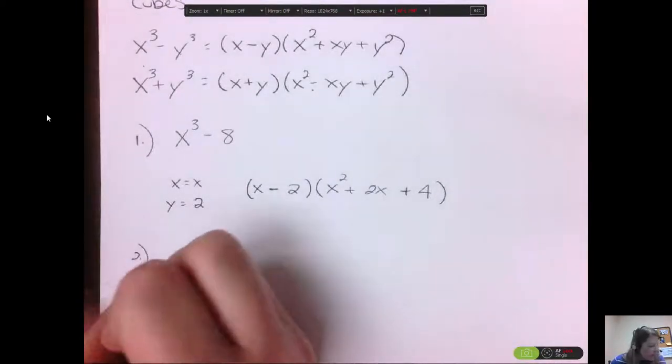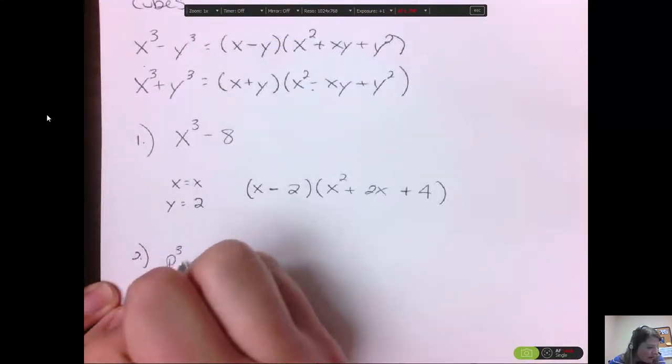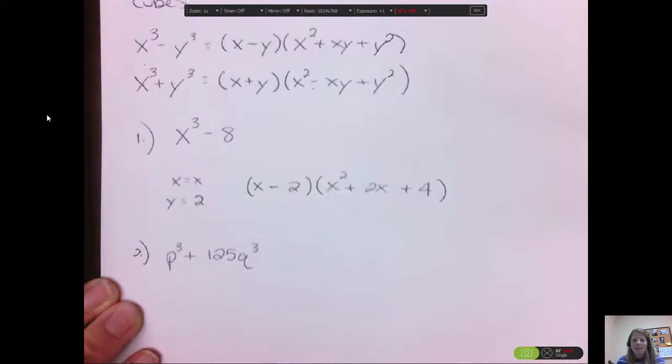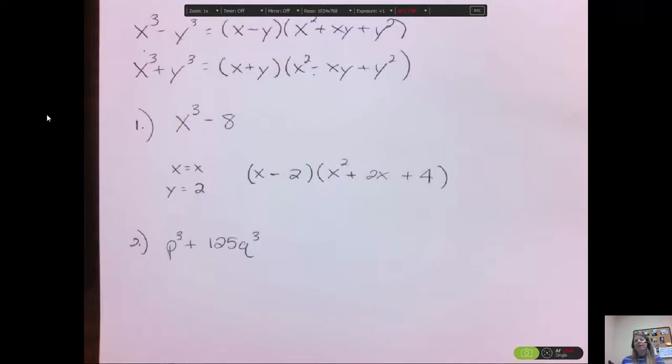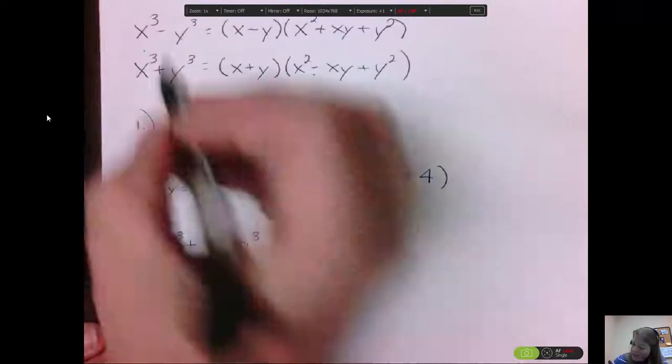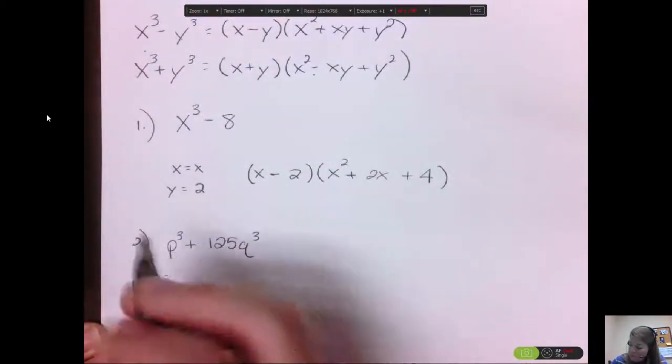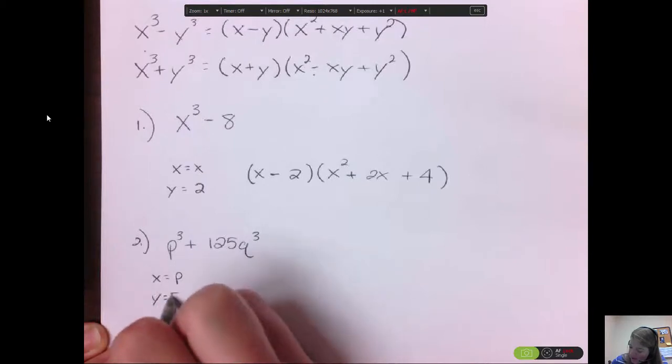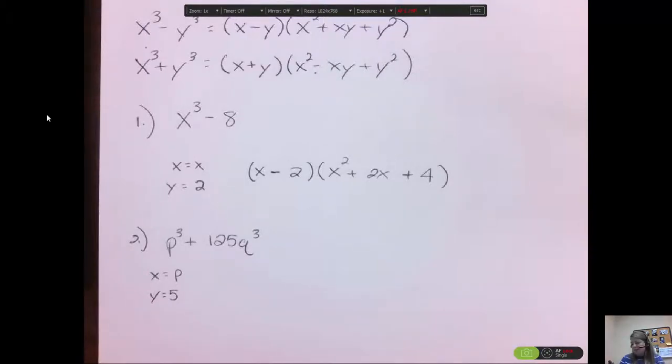Let's do a harder one. What if I had p to the third plus 125q to the third? So I threw in a bigger number, and I threw in a 125. Well, let's look at what x and y would equal. The x is the third root of p to the third, which would be p. And the third root of 125 is 5, because 5 times 5 times 5 is 125.